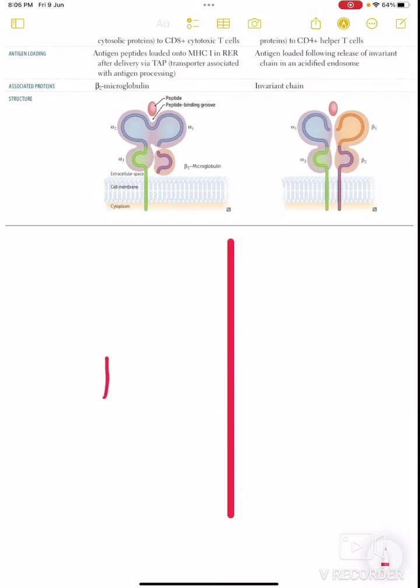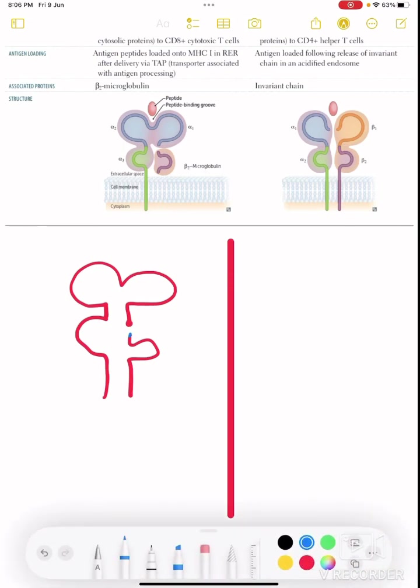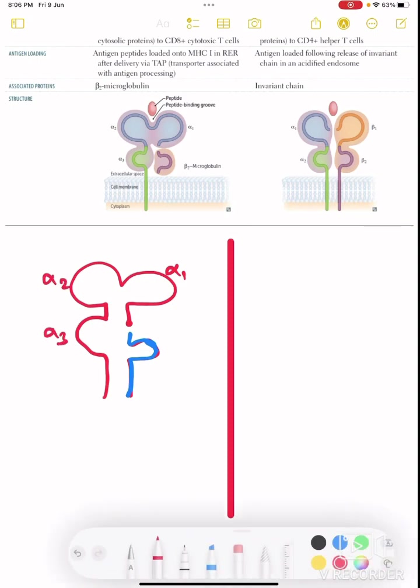MHC class 1 has two chains. The first chain I have marked with red, and the second chain I am making with blue color. The first chain has three components: Alpha 1, Alpha 2, and Alpha 3. The second chain, which is a shorter chain, has only one component: Beta 2 microglobulin.